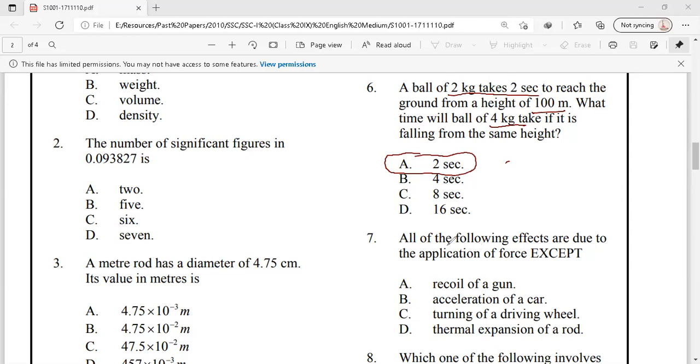Let's see question number 7. All of the following effects are due to the application of force except. Recoil of the gun involves force. Acceleration of the car involves force. And the turning of a driving wheel also involves force. Thermal expansion of the rod is the one in which the expansion or the change in length is not due to the force but it is due to the change in temperature. Option D is the right answer.